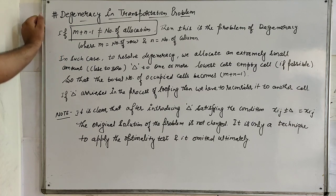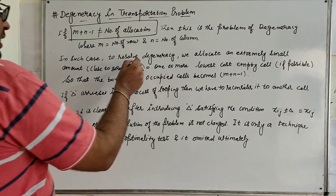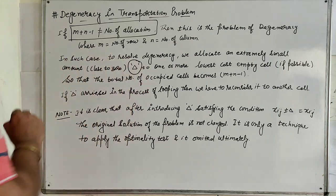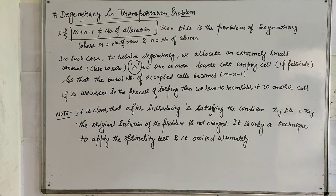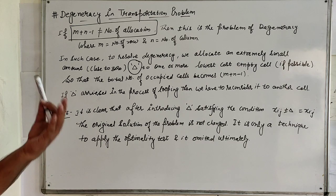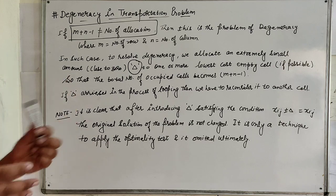So in this particular case, to resolve this degeneracy, we have to allocate an extremely small amount — let it be delta — to one or more of the lowest cost empty cells, if possible. That way, the total number of occupied cells becomes M plus N minus 1.